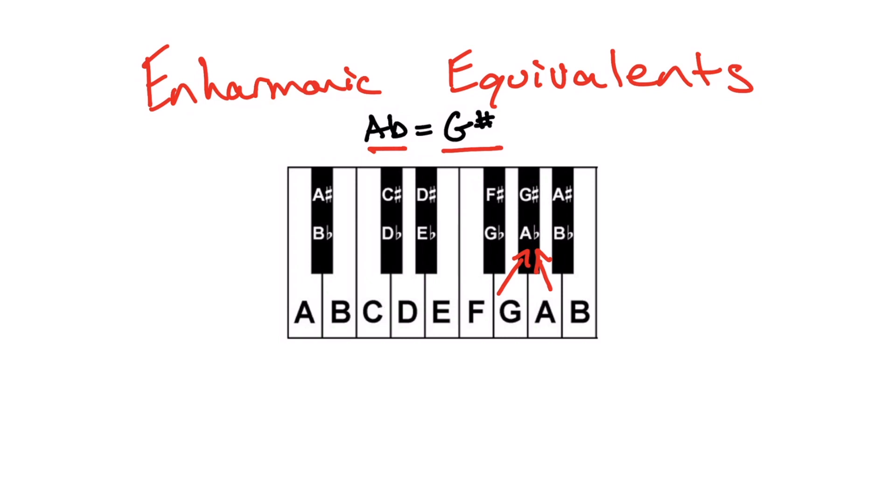Now the question of when we would call a note A flat versus G sharp is again something we've looked at before. It depends a lot on the major scale that's being used and the types of letters that are needed to fill that scale. We've also talked about how major scales and key signatures are very closely linked. And so let's look at why we might call a certain key by a sharp name versus a flat name.